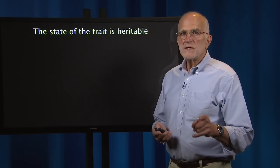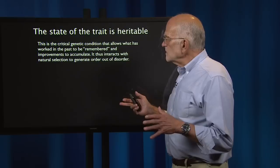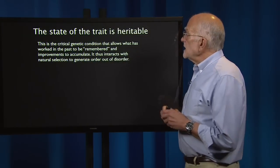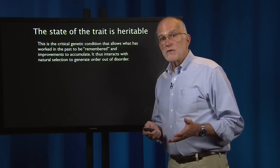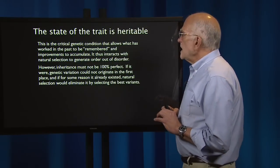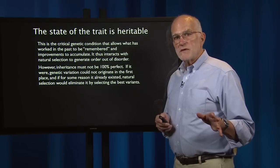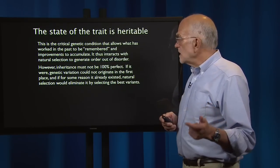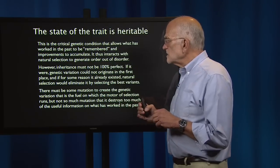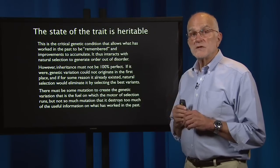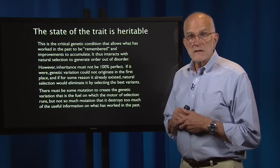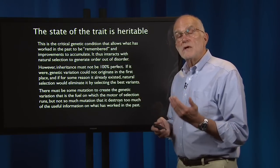The next necessary condition is that the state of the trait must be heritable — that is the critical genetic condition that allows what worked in the past to be remembered and improvements to accumulate. It thus interacts with natural selection to generate order out of disorder. However, inheritance must not be 100% perfect. If it were, genetic variation could not originate in the first place. There must be some mutation to create the variation that is the fuel on which the motor of selection runs, but not so much mutation that it destroys the useful information on what worked in the past. So there must be some intermediate, fairly low, optimal mutation rate.